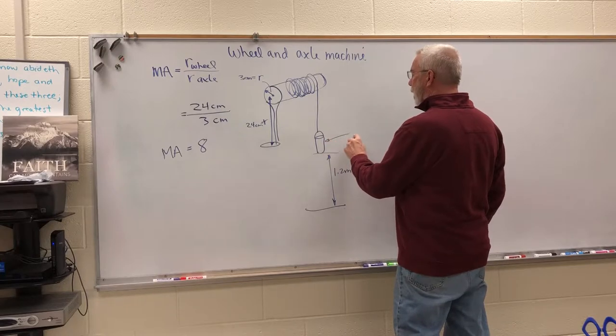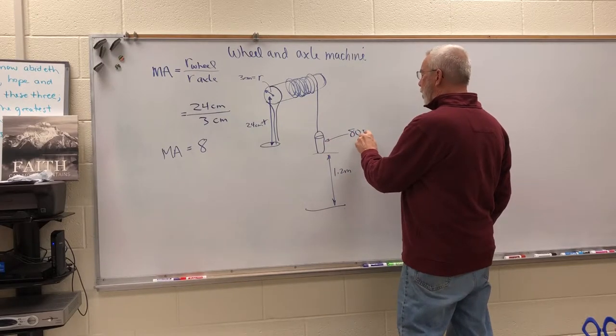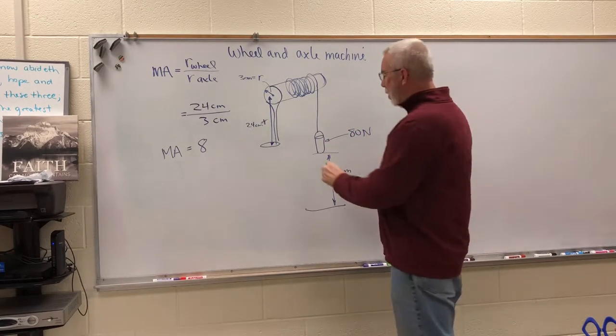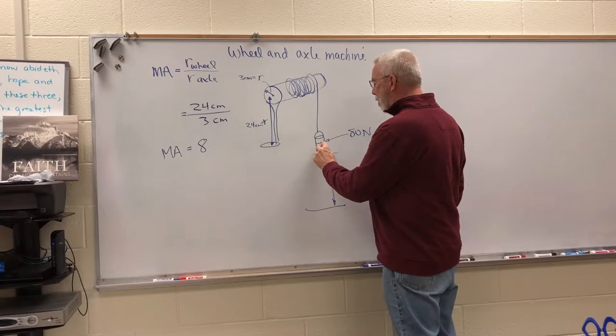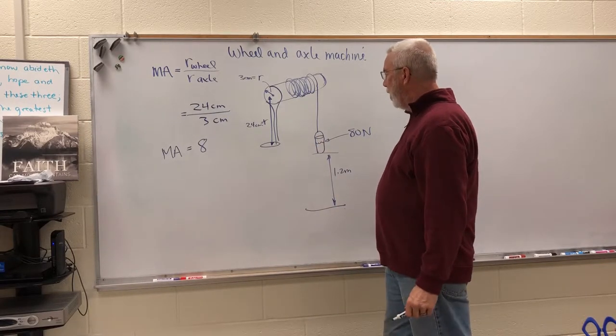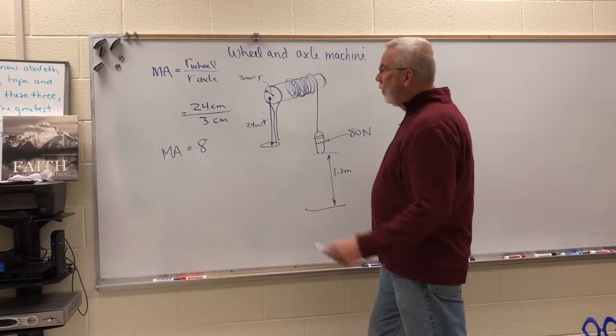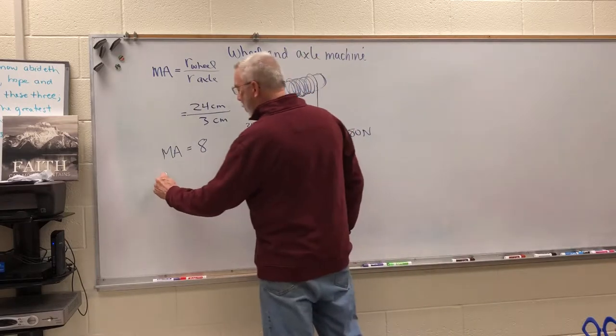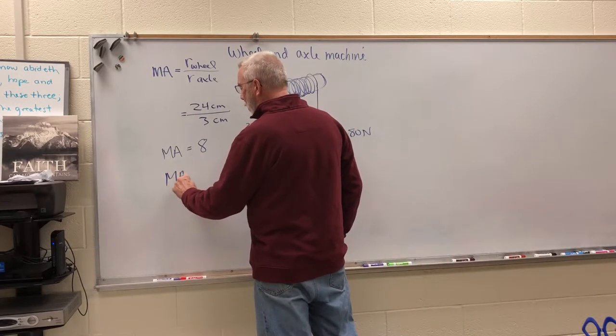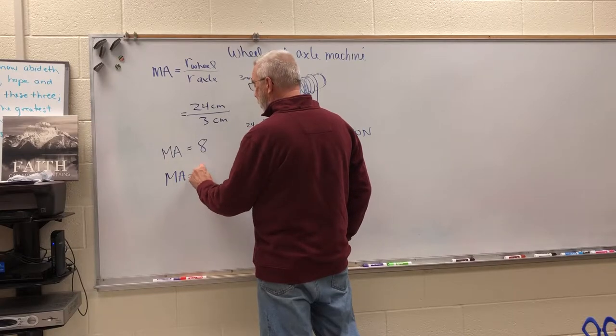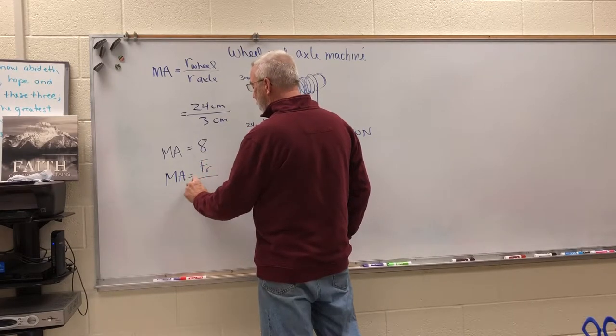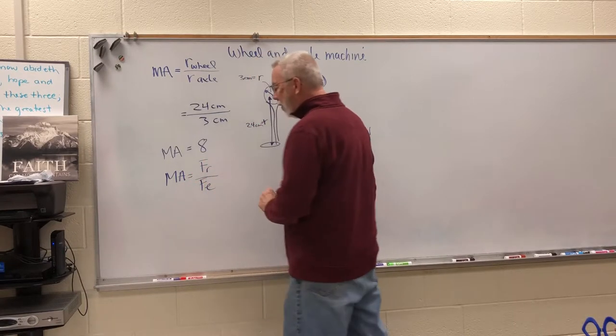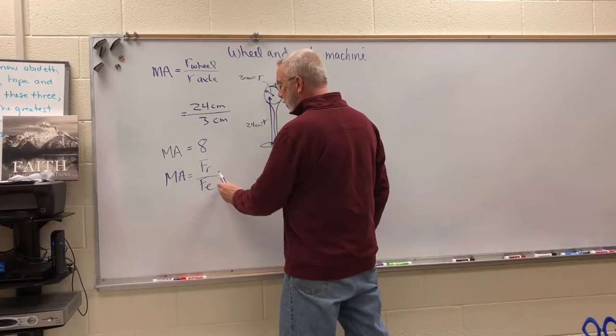So let's suppose, let's make this easy, let's say that the bucket is 80 newtons. It has a weight of 80 newtons because it's got a certain amount of water in it. Well the other two mechanical advantage formulas that we learned was the mechanical advantage is equal to FR over FE.